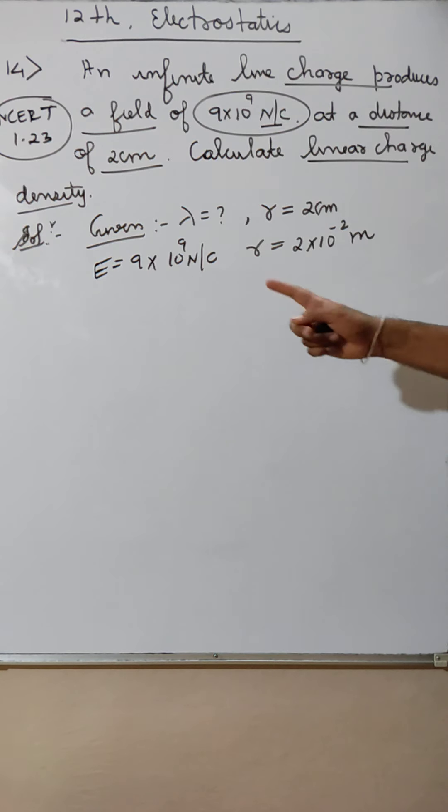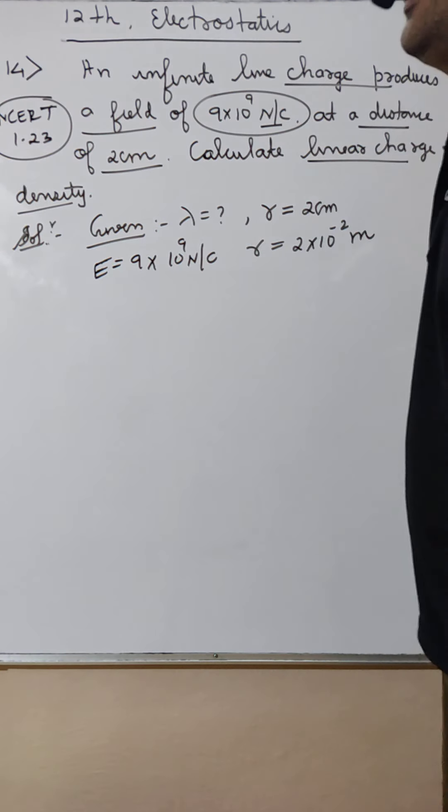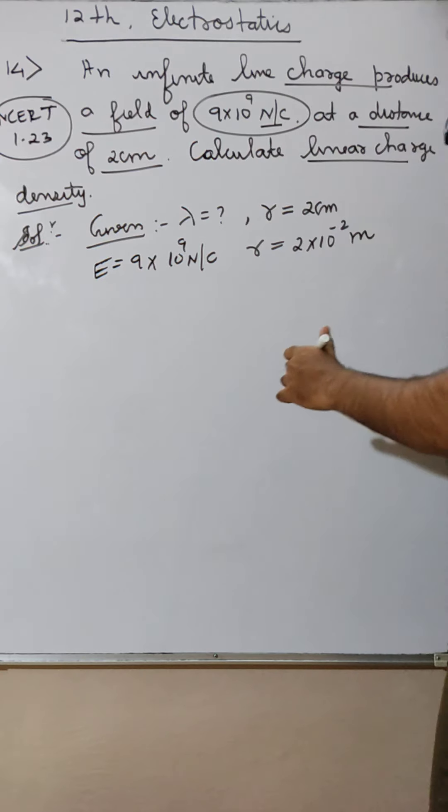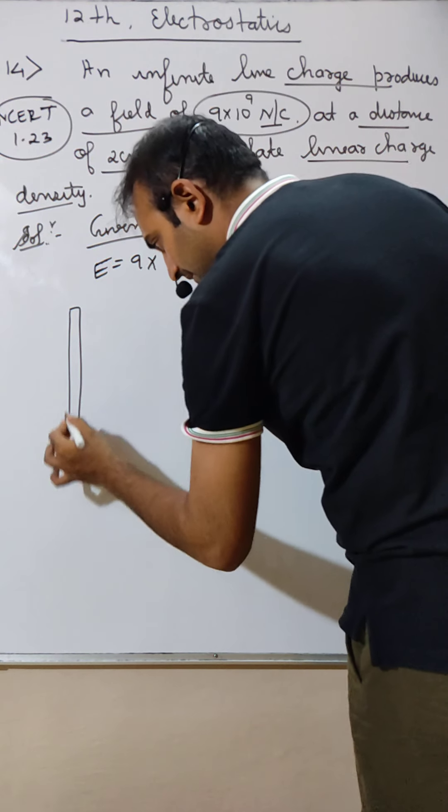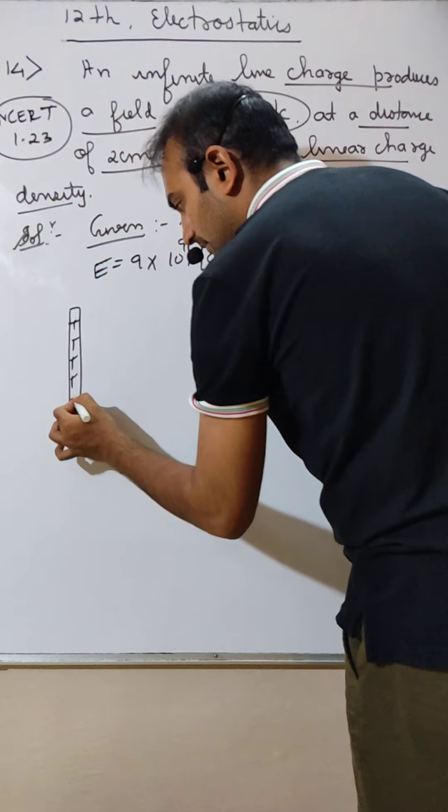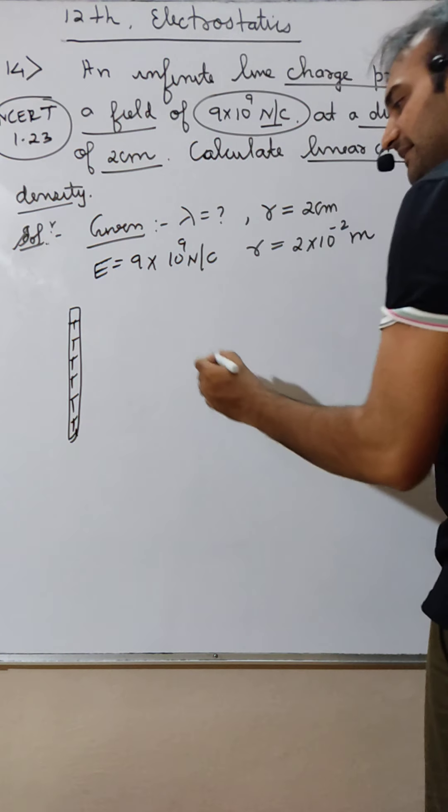Linear charge density lambda. Is that electric field. And line charge. This is anant lamba charge, line.